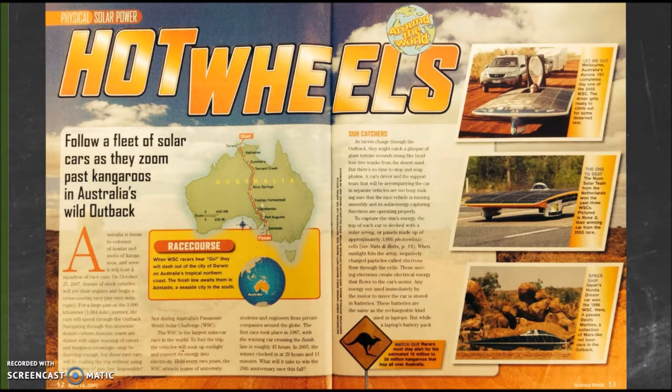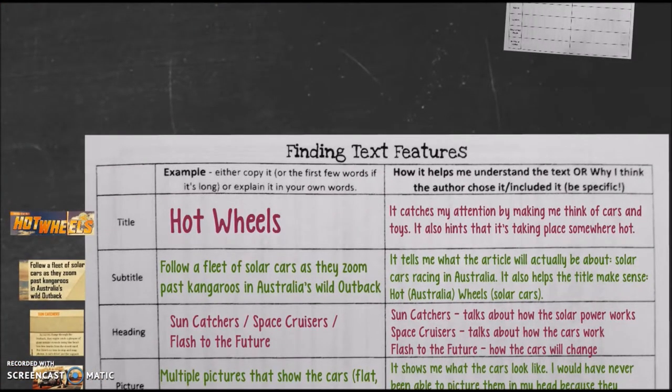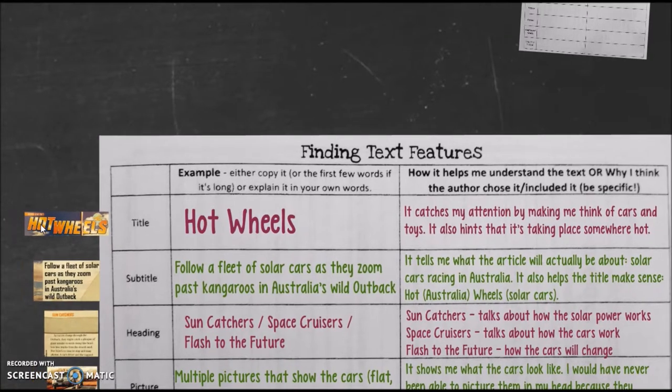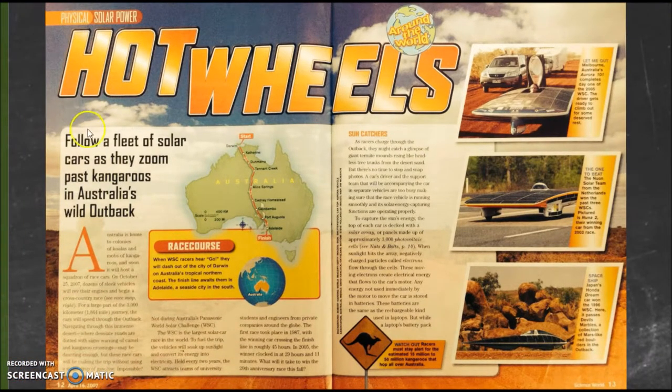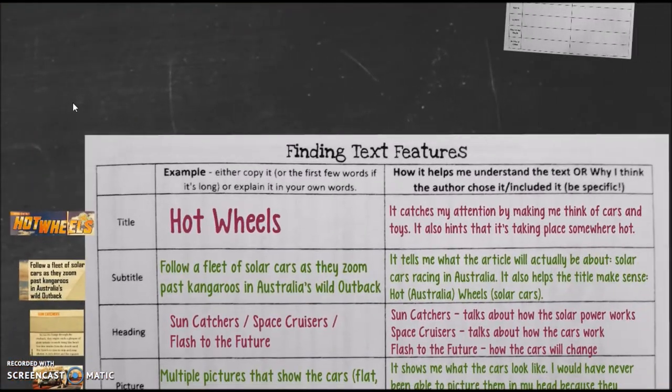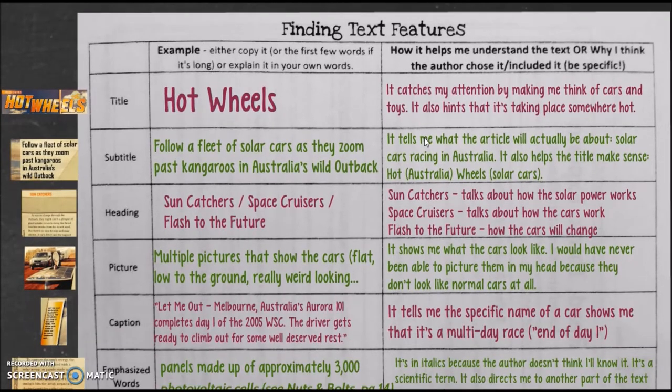Let's go back to the idea of the hot wheels. Look for the title. So you're seeing my example here. You put hot wheels, white car retention. What about the subtitle? Well, again, let's go back and look. Follows a fleet of solar cars, right? You know right here is your subtitle. So under subtitle, you write down what the subtitle was. Again, if it's a longer subtitle, don't write it the whole thing. But I expect you to write at least some of it. And then, what did this do for me? Well, it tells me what the article will actually be about. Solar cars racing in Australia. Also helps the title make sense. Hot, Australia, wheels, solar car. So we know what that does. What else do we have here? Well, going through what we just talked about. We had the heading, sun catchers, space cruisers, flash of the future. Then explain what those headings meant. The pictures. What did that help tell us? What did the captions help tell us? What about emphasize words? What did they do for us? And graphics or sidebar.